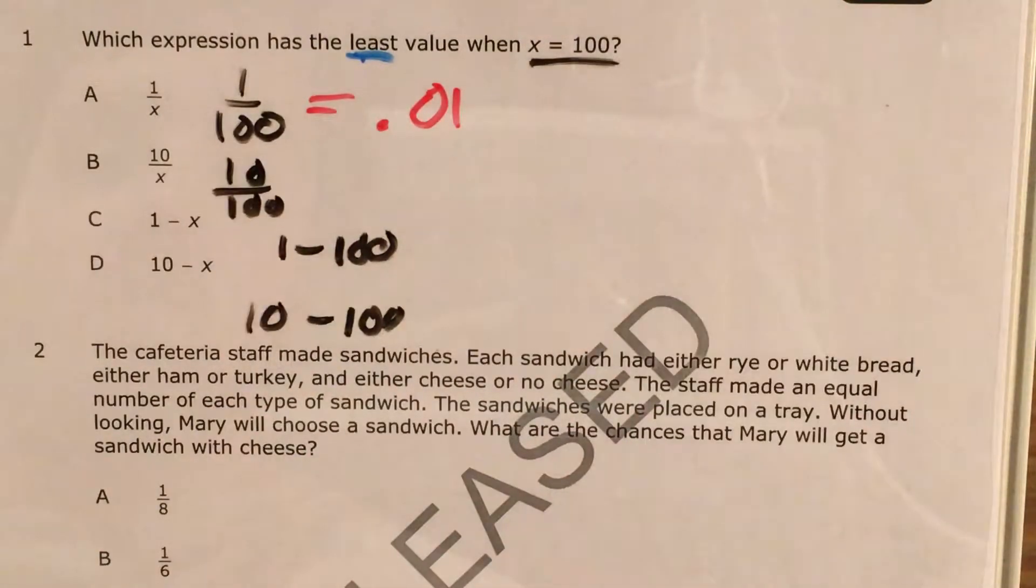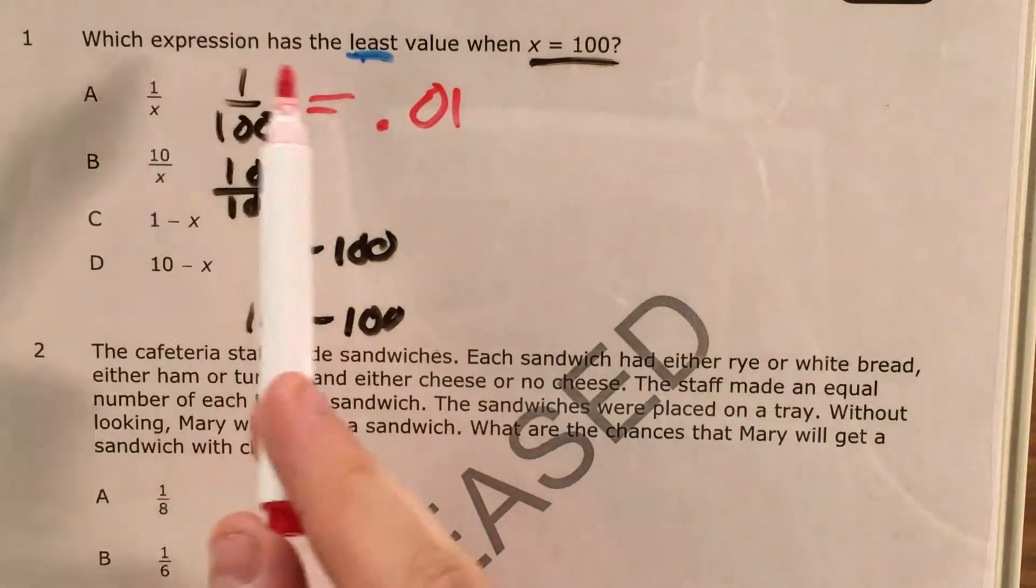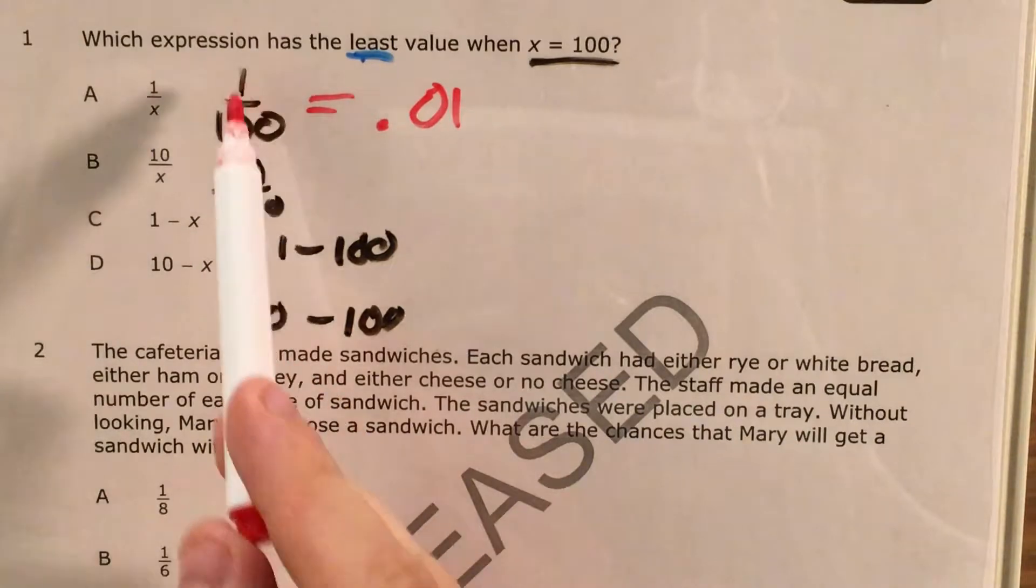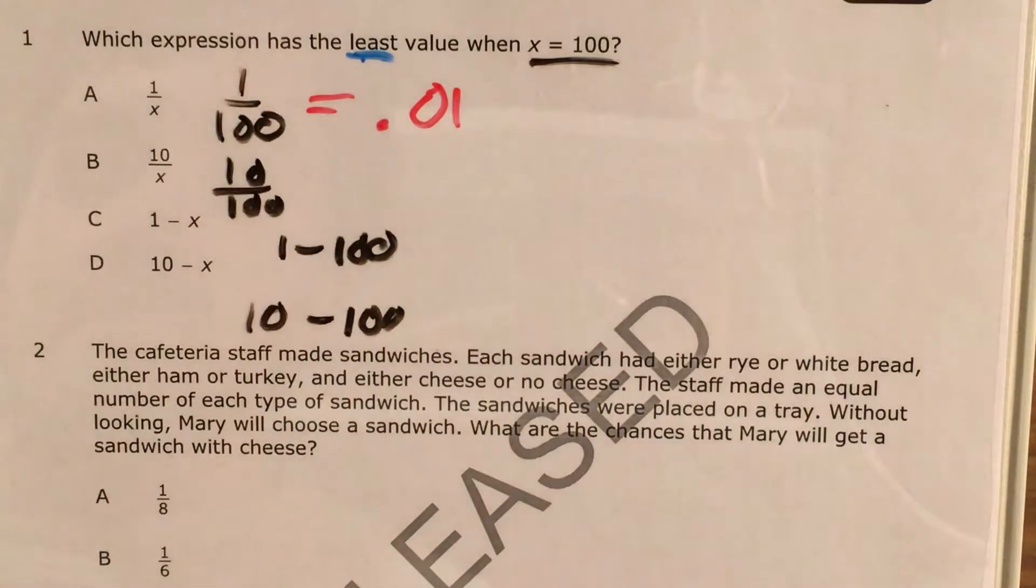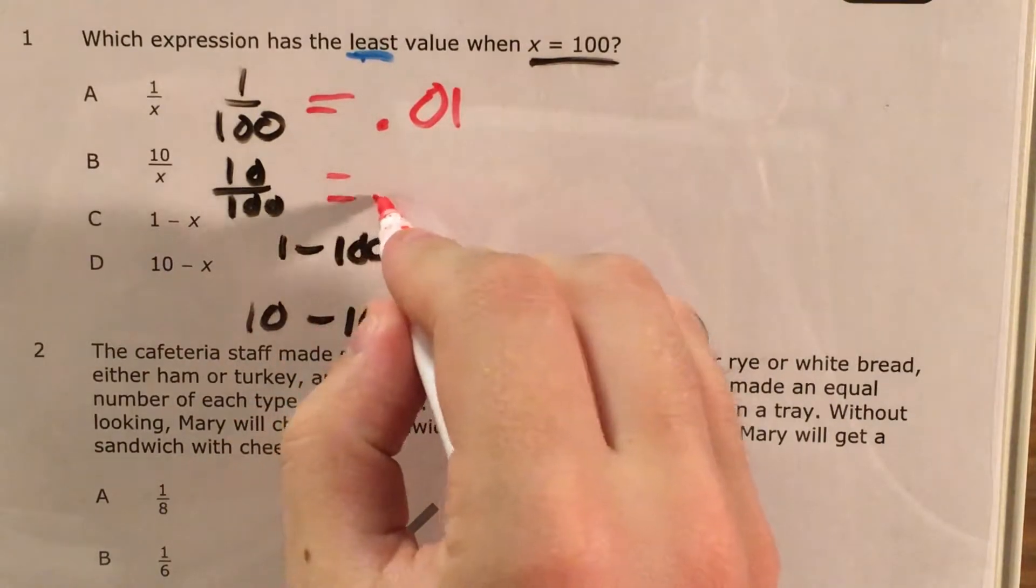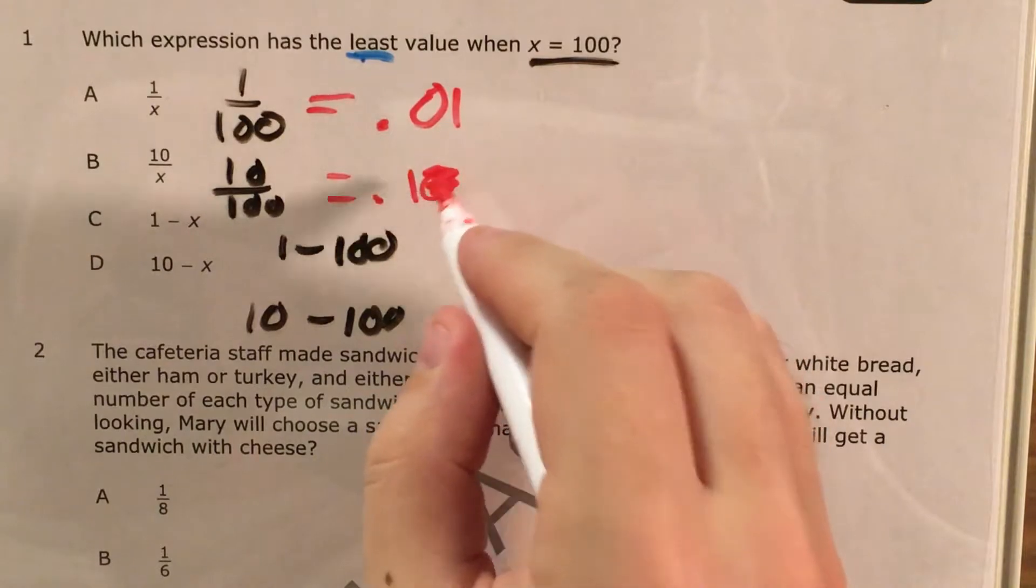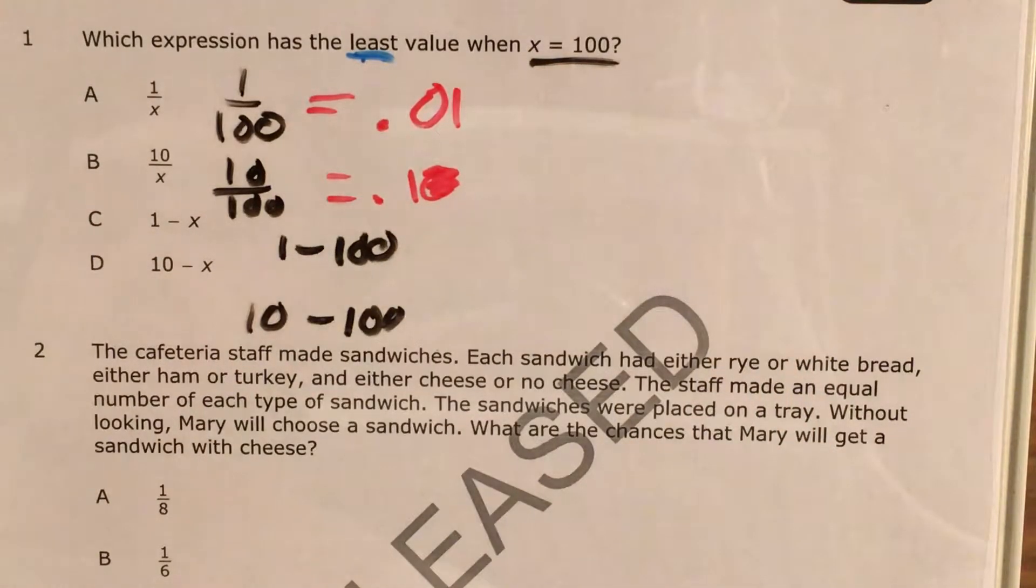Some other people may know it as 0.01. Now we don't have a calculator to do this question with, but this is probably the easiest way just to go from 1 one-hundredth as a fraction to 1 one-hundredth as a decimal. There are going to be a lot of questions that make you go back and forth in this skill. Choice B is another example of this. 10 over 100 is the same as 0.10, also known—I don't need the 0 on the end—so we can call this 0.1 or 1 tenth.